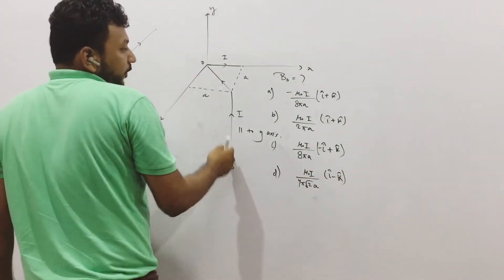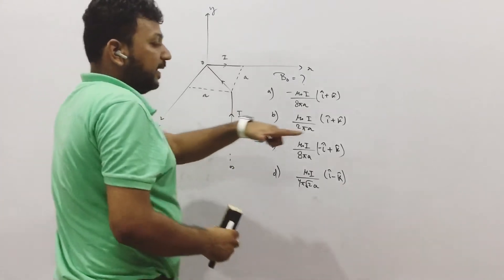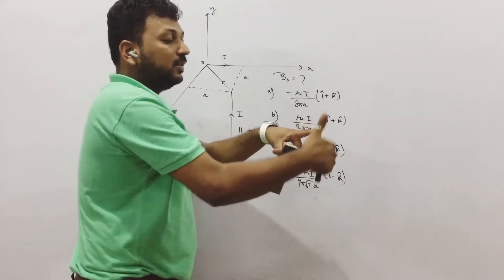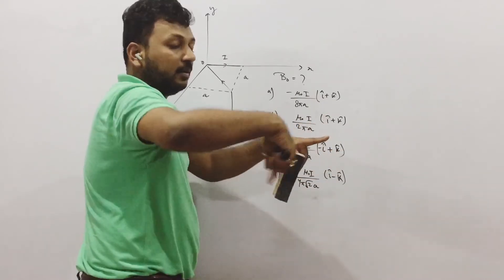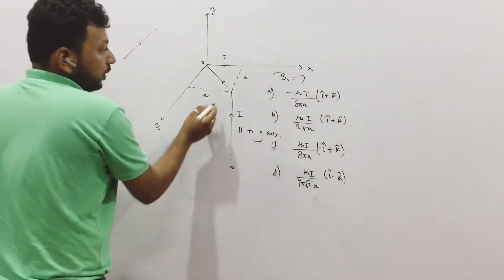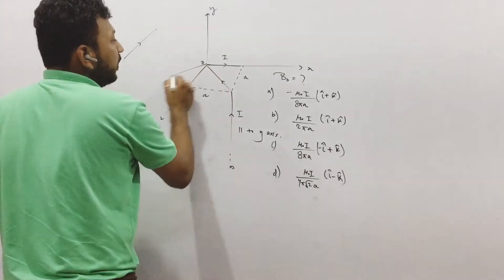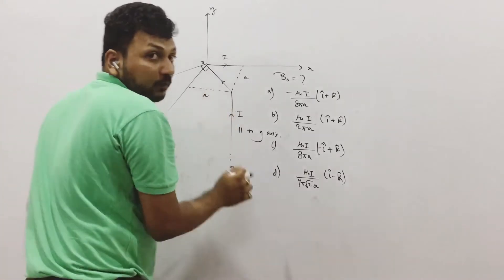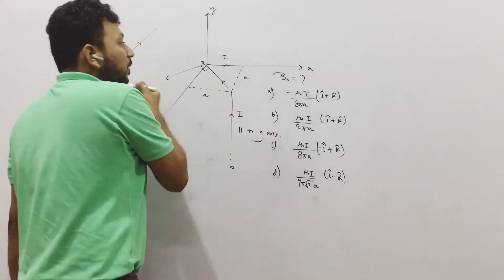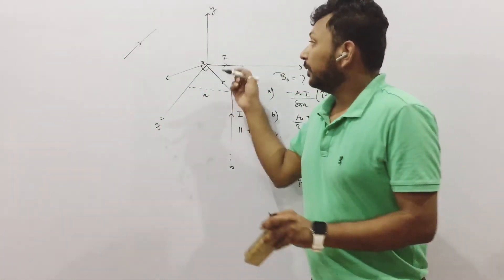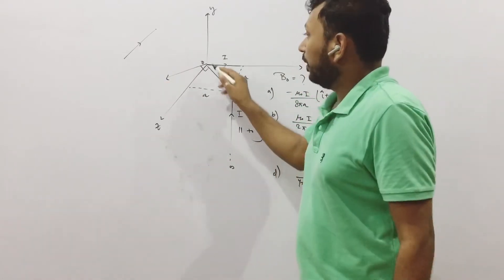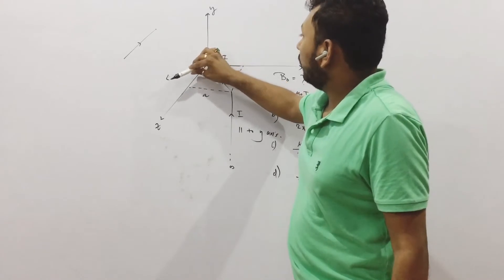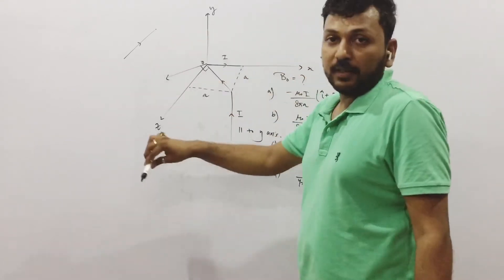So we are only left with this current. Now if you see, the plane is like this and there is a current like this. So due to this current, the magnitude will be perpendicular to the line joining it. That means magnetic field will be in this direction. Magnetic field due to this current will be perpendicular to the line joining the point and the current. That means it will have one component in minus i and another in plus k.